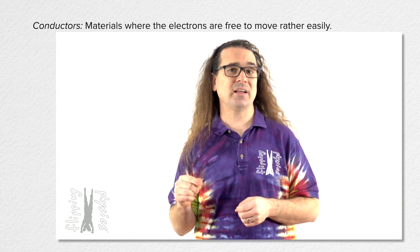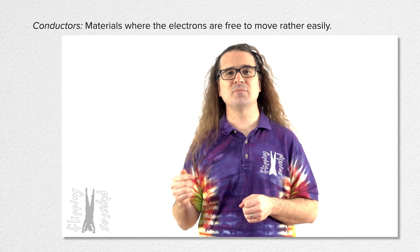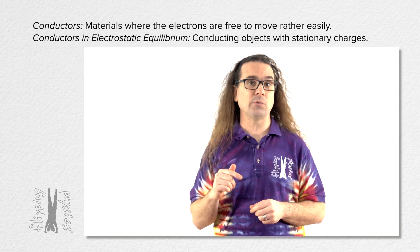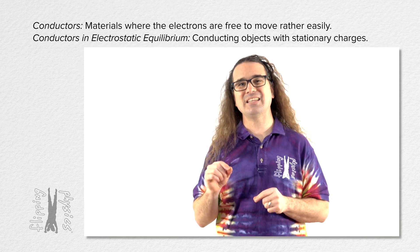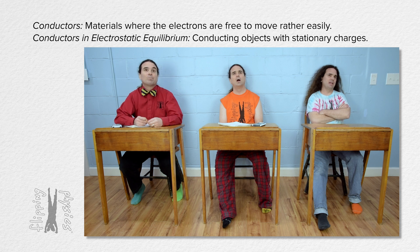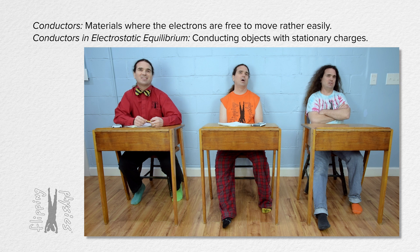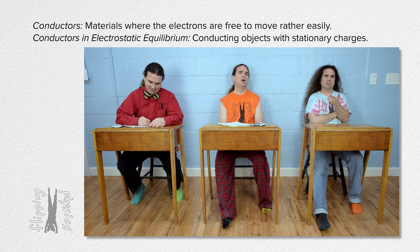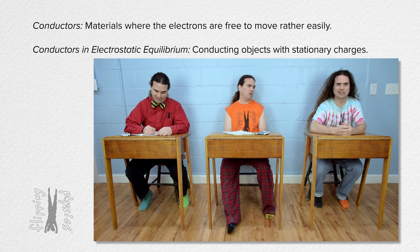Conductors are materials where the electrons are free to move rather easily. However, when they are in electrostatic equilibrium, that means that the charges in the object are stationary. Equilibrium means the net force acting on the object or system is zero, which means acceleration is zero — it could be at rest or moving at a constant velocity. So the charges do not have to be stationary; they could be moving at a constant velocity.